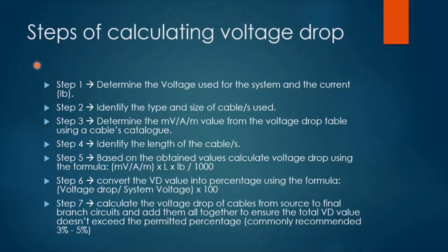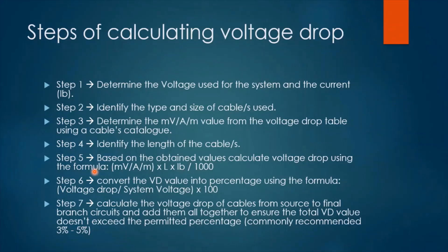Before we look at some examples, let's identify the seven steps of calculating voltage drop. Step one: determine the voltage used for the system and the design current (IB). Step two: identify the type and size of cable or cables used. Step three: determine the millivolt per ampere per meter value from the voltage drop table using a cables catalog. Step four: identify the length of the cable or cables. Step five: based on the obtained values, calculate the voltage drop using the formula.